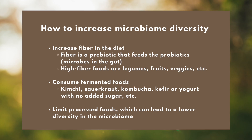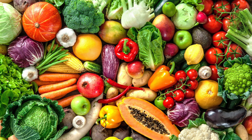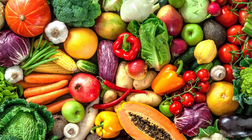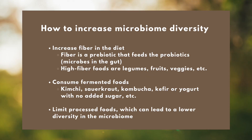So outside of eating plants rich in color and rotating your foods, what else can you do to improve the diversity within the microbiome? Here are some other things to consider: increase fiber in the diet — fiber is a prebiotic that feeds the probiotics, and high fiber foods are legumes, fruits, vegetables, etc. Also consume fermented foods like kimchi, sauerkraut, kombucha, kefir, or yogurt with no added sugar.